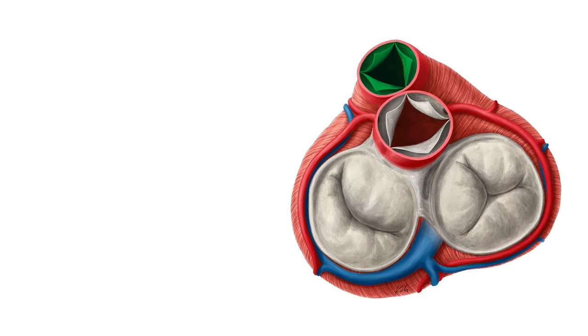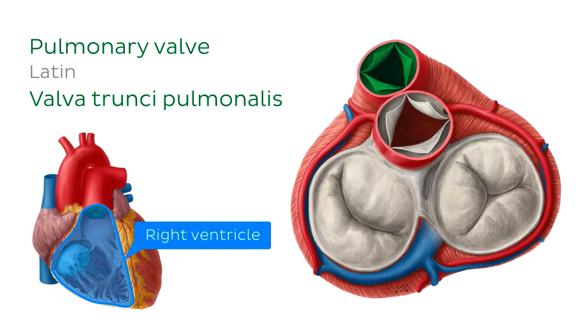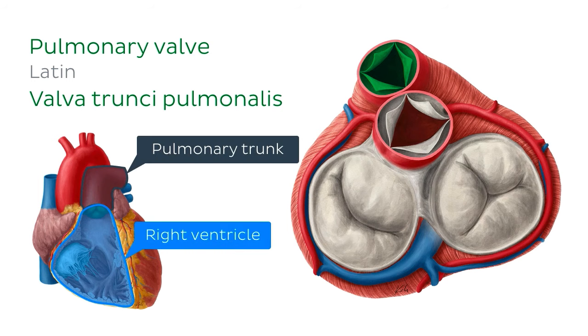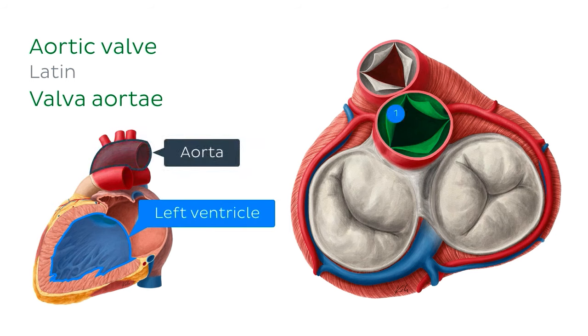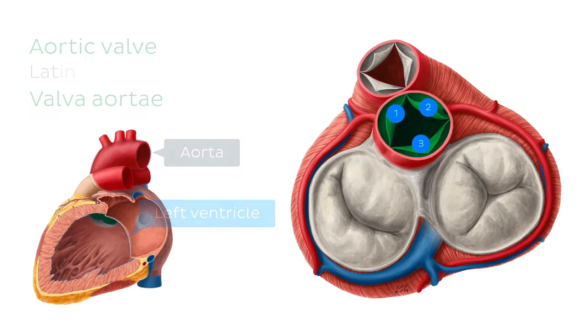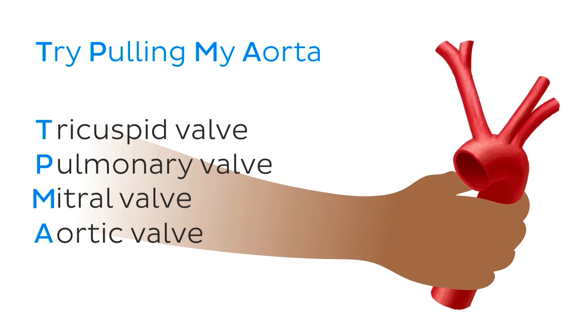Semilunar valves prevent backflow from the great vessels to the ventricles of the heart. The pulmonary semilunar valve is between the right ventricle and the opening of the pulmonary trunk — it has three cusps or leaflets. The aortic semilunar valve is between the left ventricle and the opening of the aorta, and it too has three semilunar cusps or leaflets. If you're not sure you can remember all of the valve names, here's a trusty study hack with the mnemonic: try pulling my aorta. Let's earmark these resources for later study when we want to look at these structures in more detail.